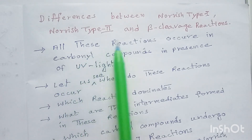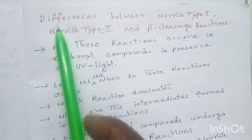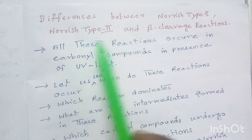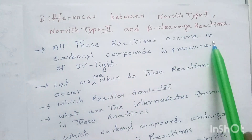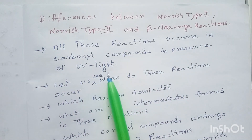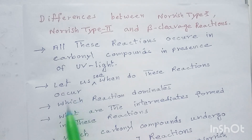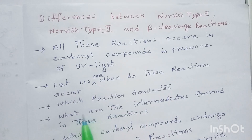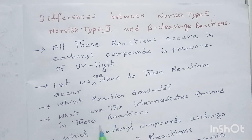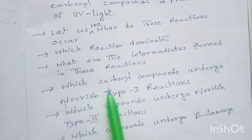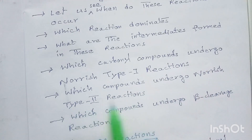We have learned about Norrish type 1 reactions, Norrish type 2 reactions, and beta cleavage reactions. Today let us see the differences between these three reactions. All these reactions occur in carbonyl compounds in presence of UV light. Let us see when these reactions occur, which reactions dominate, what intermediates are formed, and which carbonyl compounds undergo each reaction.